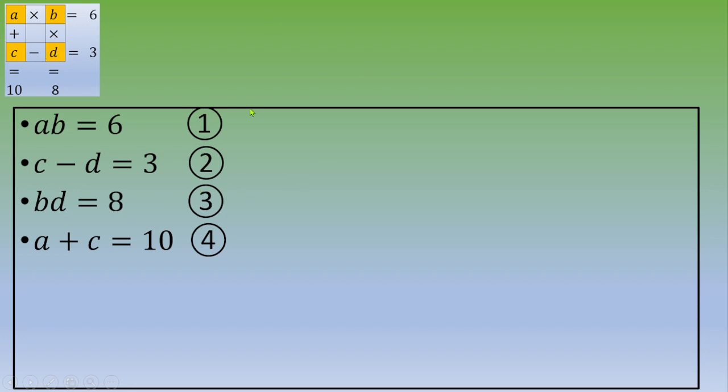Okay, so for example, if you get equation number 4 minus equation number 2, you will get A plus C minus C plus D equals 10 minus 3. You end up with A plus D equals 7.